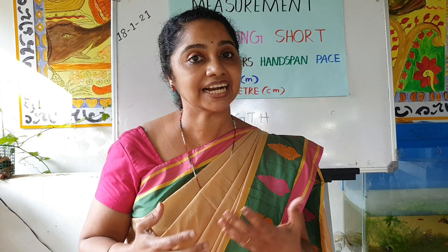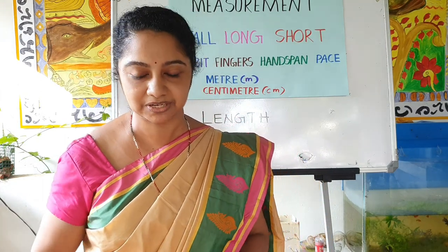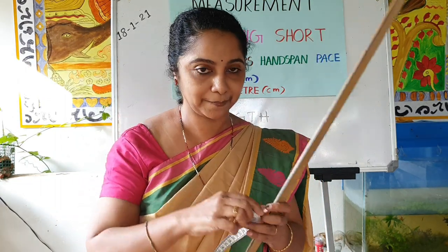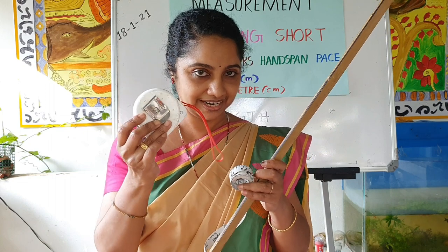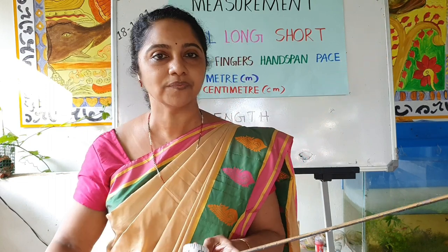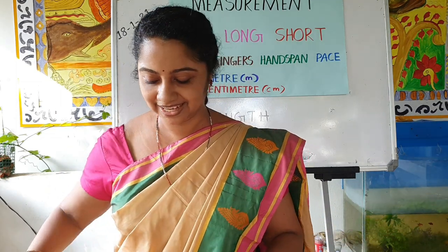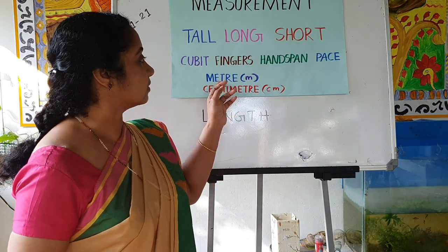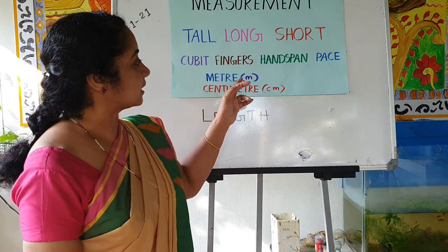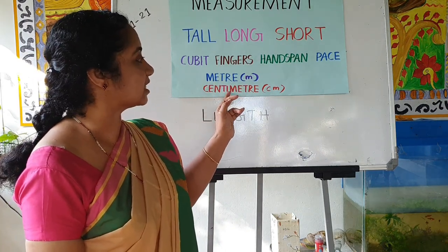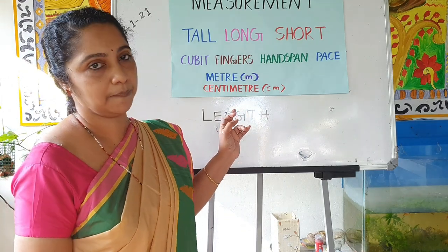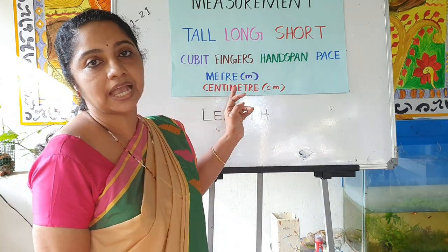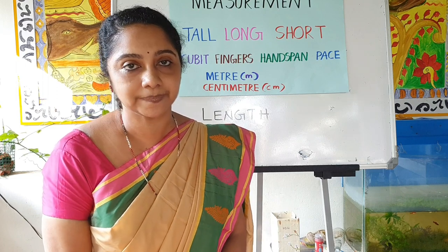So we use some standard measurements. For taking standard measurements we need some tools, like this scale, measuring tape, and so on. We use these tools for measuring length. We can also measure length using some units. Meter and centimeter are the units of this standard measurement.